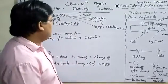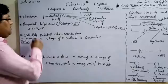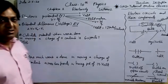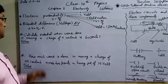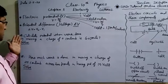Formula of electric potential difference is delta V is equal to V2 minus V1.